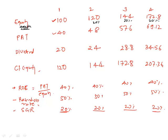Also look at your PAT, from 40 to 48 that's a growth rate of 20 percent. 48 to 57.6 is also 20 and this should also be 20. Dividend 20 to 24, that's a growth rate of 20 percent again and this should be 20 percent and this should also be 20 percent.